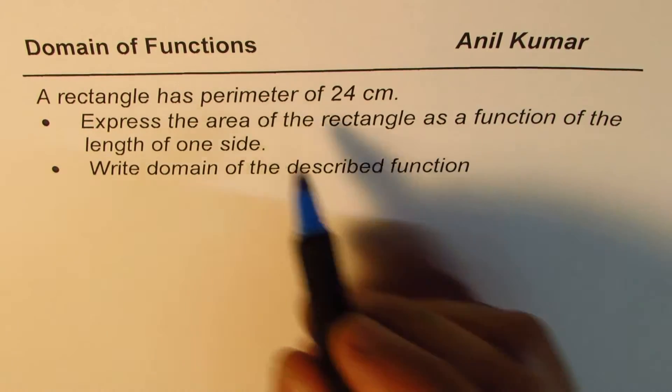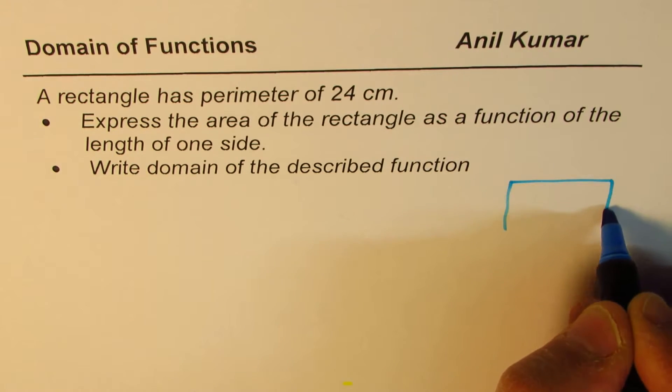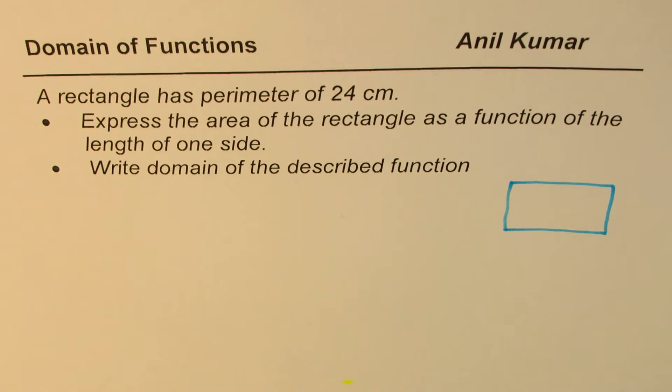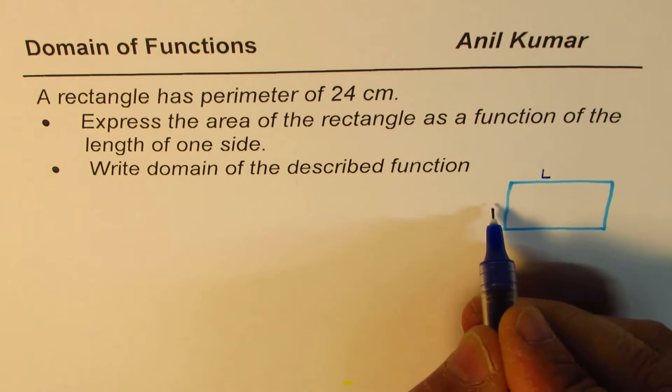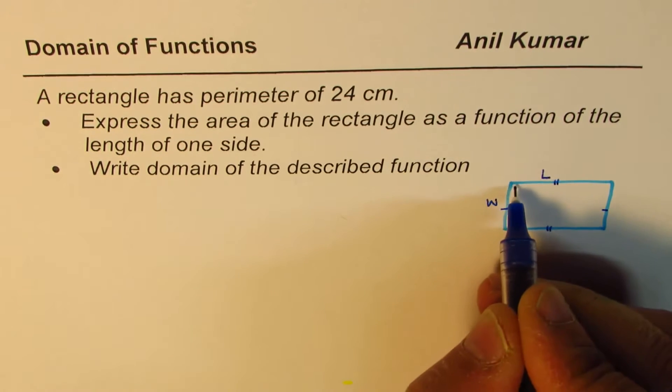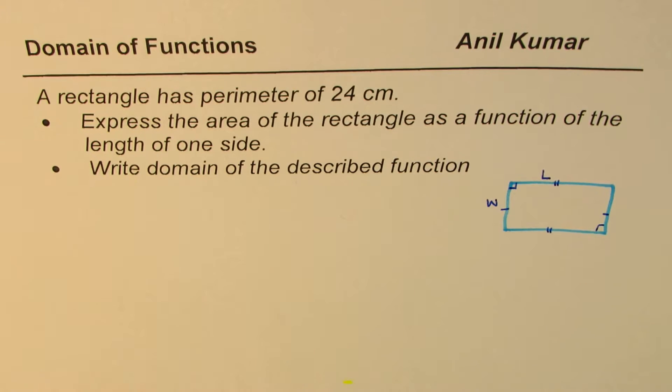A rectangle has a perimeter of 24 centimeters. Let me sketch one here. This is a rectangle which has a perimeter of 24 centimeters. So let's define length and width variables. Let us say that length of this is L and W is the width. So these opposite sides are equal as we know, and this is right angles. So that is the rectangle for us.